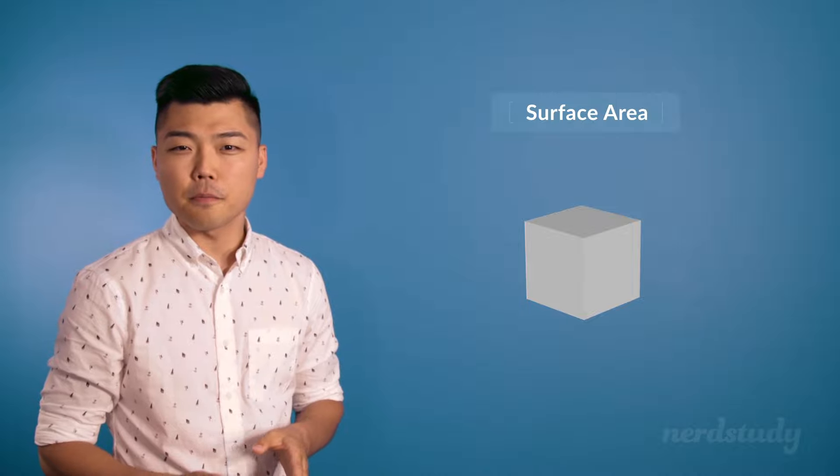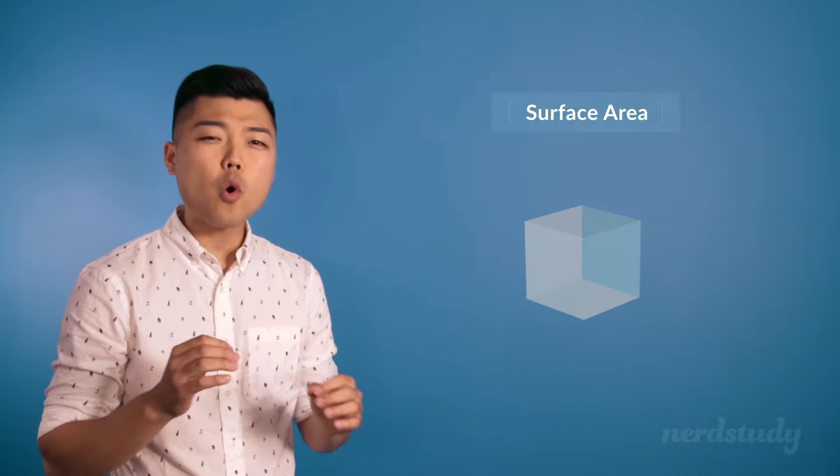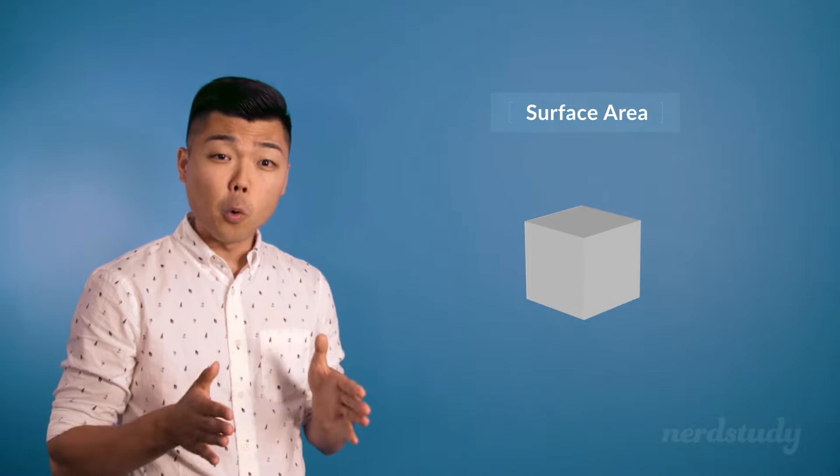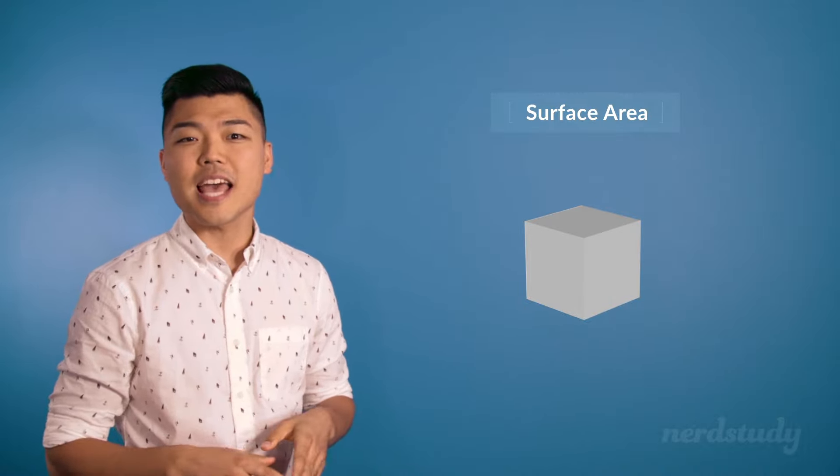A surface area measures how much material is required to cover or construct a three-dimensional object. If you imagine for a second that this cube is folded up and that each side is actually paper, then you can unravel this to see the flat 2D paper that would have been needed to create this cube. The area of all this put together is the surface area. So let's just fold that back up into the form of a cube.